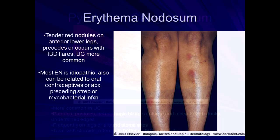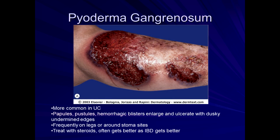Pyoderma gangrenosum is very commonly seen in ulcerative colitis patients — another severe disease with ulceration. The problem is that the diagnosis is often delayed because it's assumed to be infectious, but it does not clear up with antibiotic therapy — not even intravenous antibiotics — because these are sterile ulcers. They can be frequently on the legs and can occur around stoma sites in patients who have had removal of part of the colon. It often requires systemic steroids.